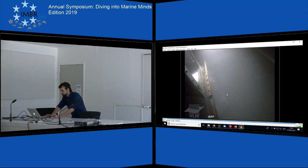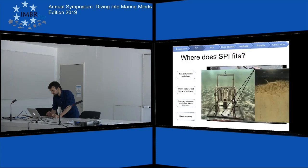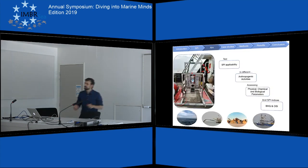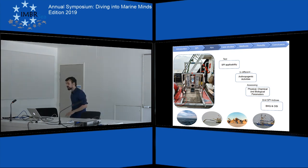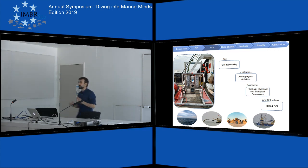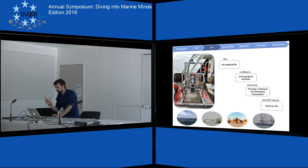And after this, we have these marvelous pictures. The aim was to test the SPI — sediment profile imaging tool — applicability in different anthropogenic activities in the Belgian part of the North Sea, assessing physical, chemical, and biological parameters, and SPI indices: OZ and BHQ, which I'm going to refer to later.